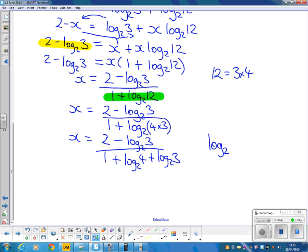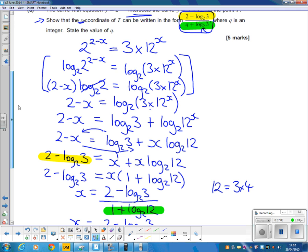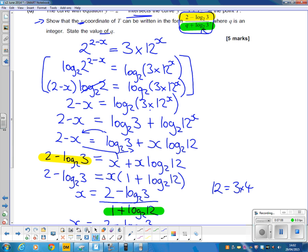Now, the nice bit is log base 2 of 4 is 2, because 2 squared is 4. So that means x is 2 minus log base 2 of 3, over 1 plus 2 is 3, plus log base 2 of 3. Same format we were asked for. The question said state the value of q. q is this number here. So q equals 3.